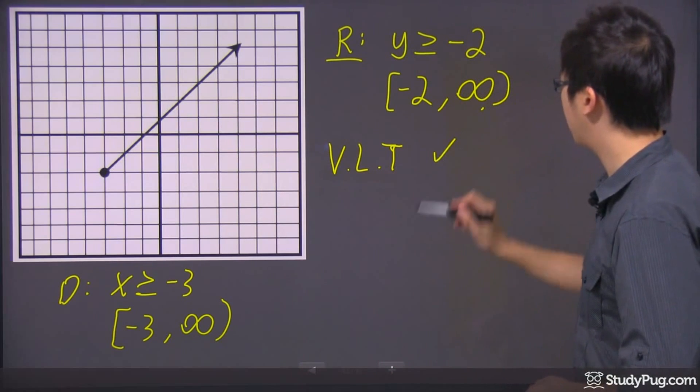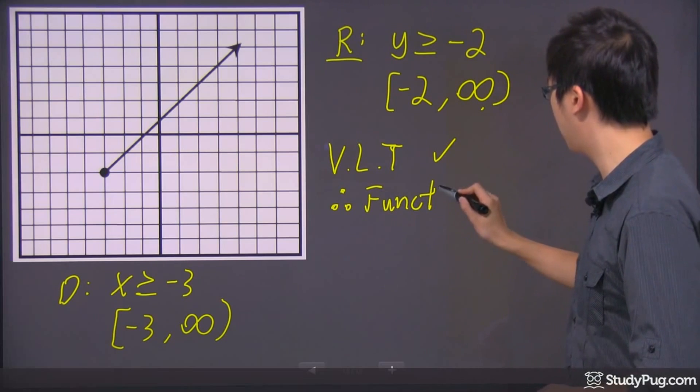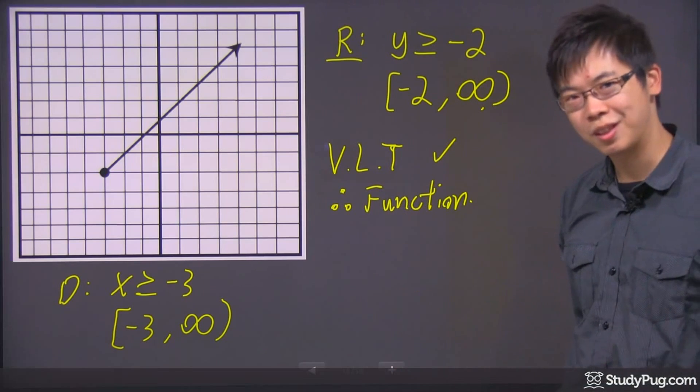So in this case, it passed my vertical line test, so therefore, it is a function. Does that make sense? Thanks for watching.